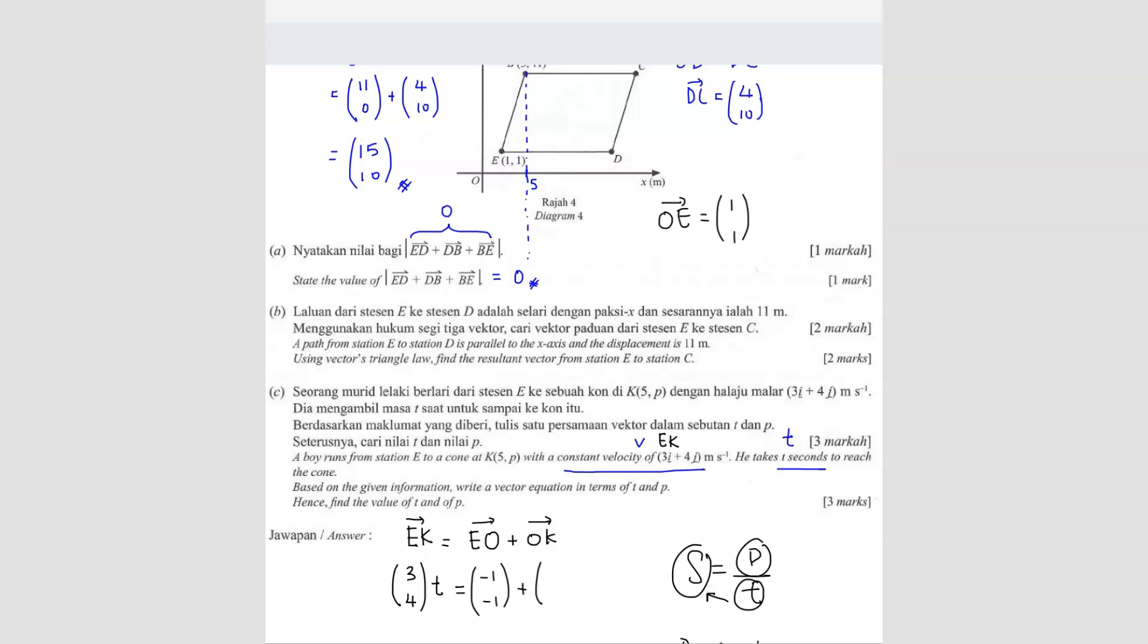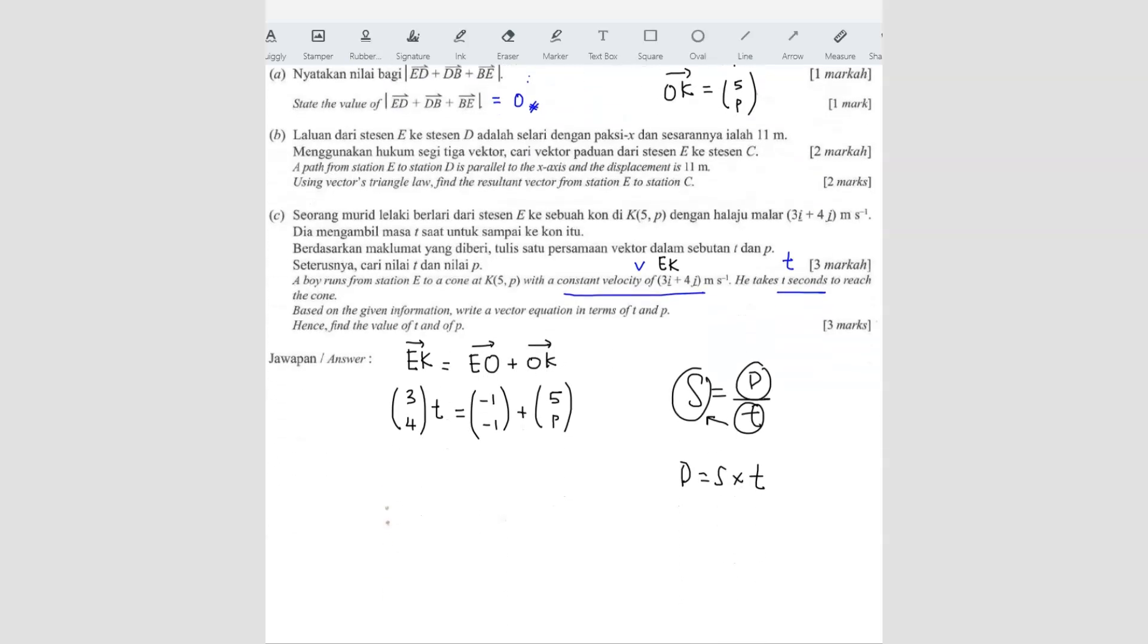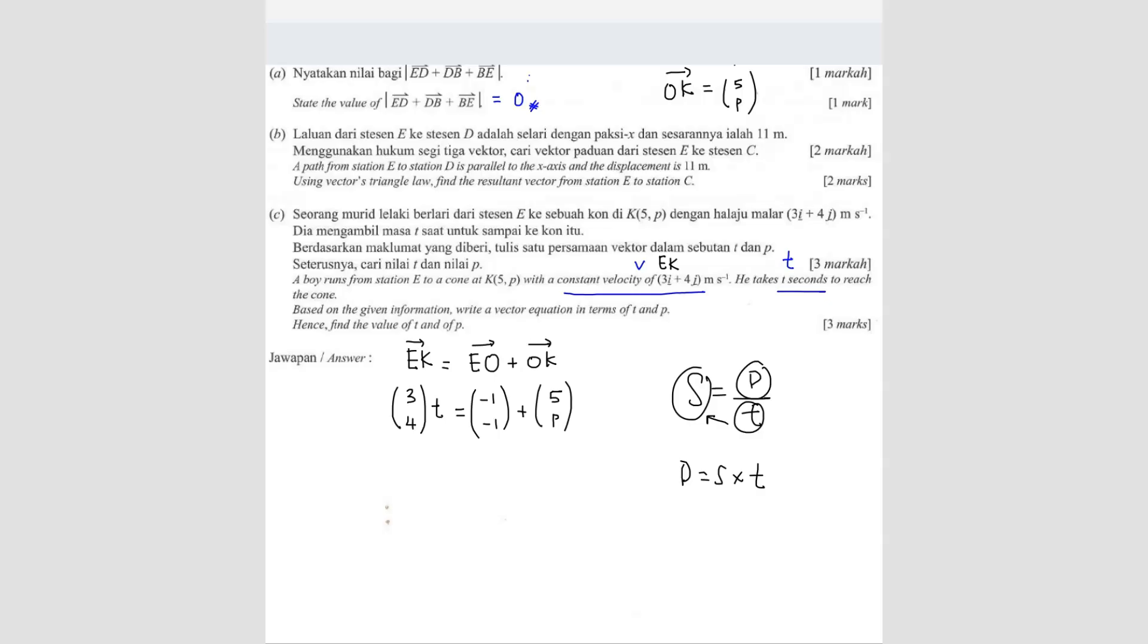So what is OK? We don't know what is the coordinate of OK, right? Because we only have the first X value. So we know this is going to be 5P, right? Because they give you K is 5P, right? So that means OK vector, the position vector of K is (5, P). So with this equation, you can find your answer.